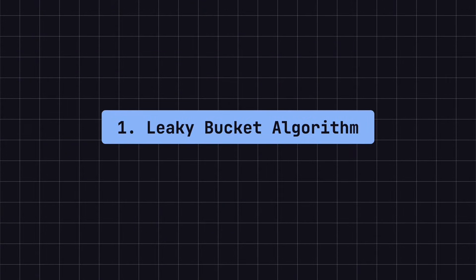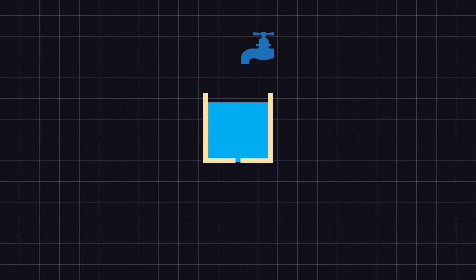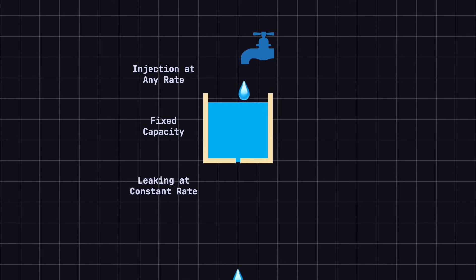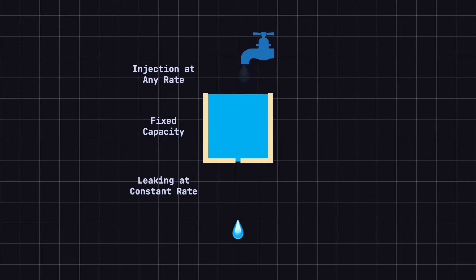The first rate limiting algorithm is the leaky bucket algorithm. You can think of it as a bucket with a hole at the bottom. The bucket has a fixed capacity, and water can be poured into it at any rate, but the water leaks out at a steady rate from the hole. If the water is poured in faster than it leaks out, the bucket will overflow, and the excess water will spill out — that is, it gets discarded.